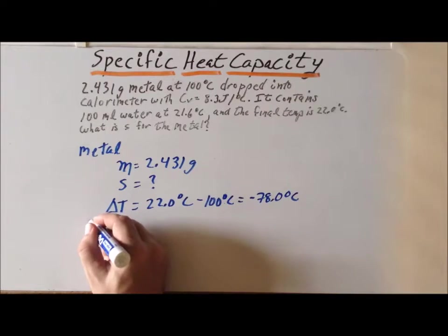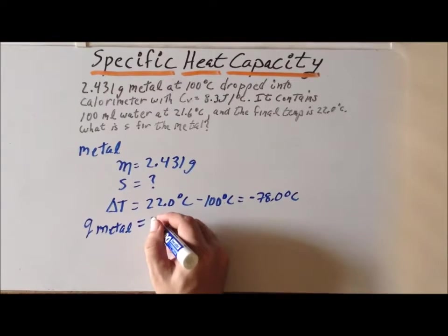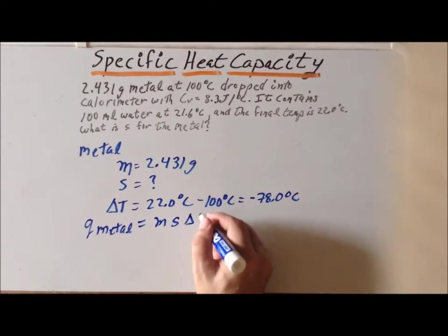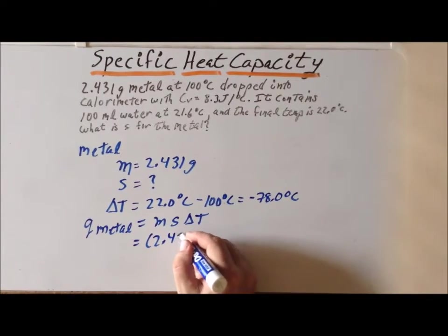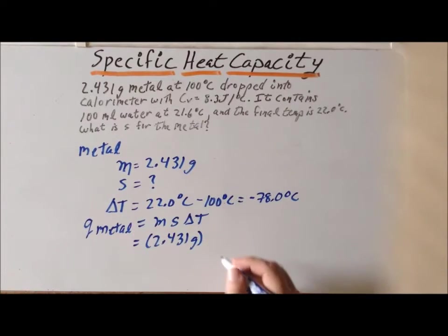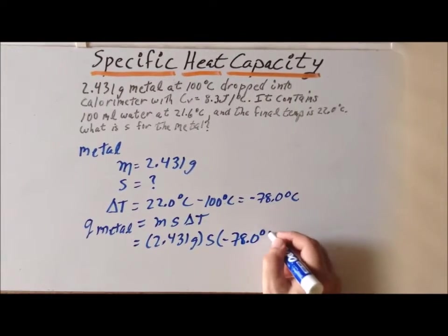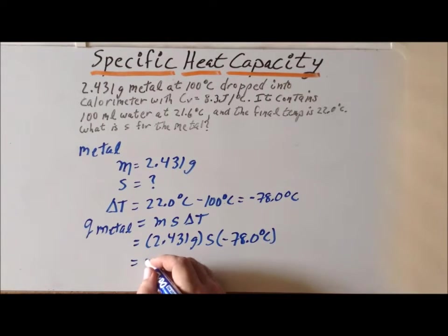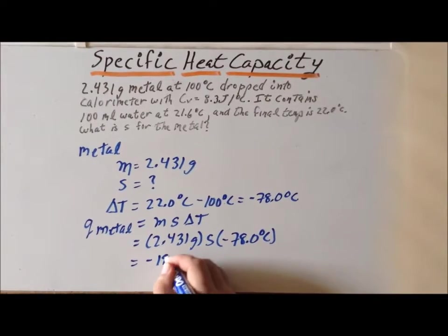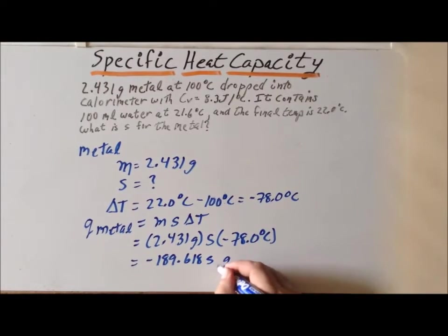So, what is Q for this? Q for the metal is equal to M times S times delta T. So, we know the mass is 2.431 grams. We just have to leave the specific heat capacity as S, and the change in temperature is minus 78.0 degrees centigrade. We can now combine terms to find that Q for the metal is equal to minus 189.618 times S grams degree centigrade.